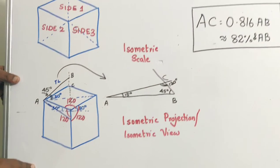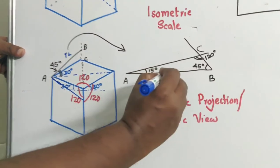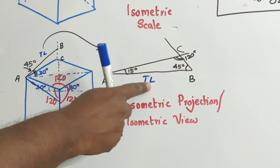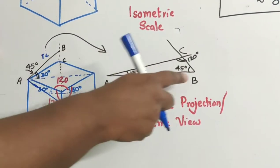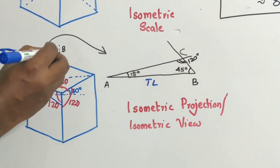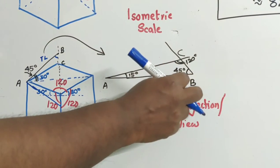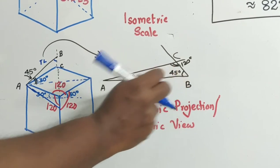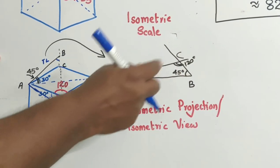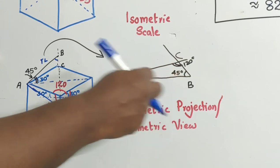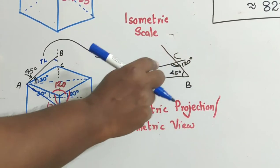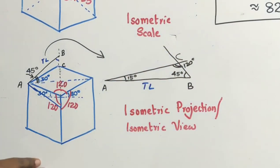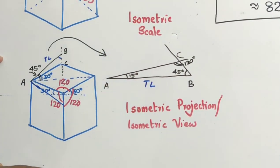Why am I calling it the isometric scale? Because AB will give you the true length and AC is the corresponding isometric length. Here, AC is the isometric length of AB. I am marking from the angle ABC as 45 degrees, and this is 15 degrees. So 180 minus 45 plus 15, that is 60, which gives angle ACB as 120 degrees. So this is a typical isometric scale.